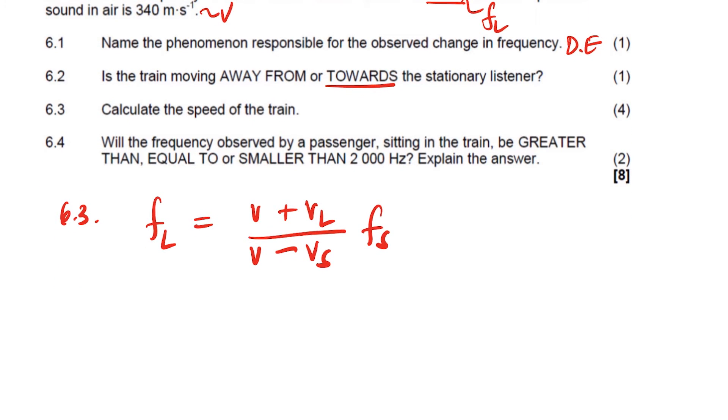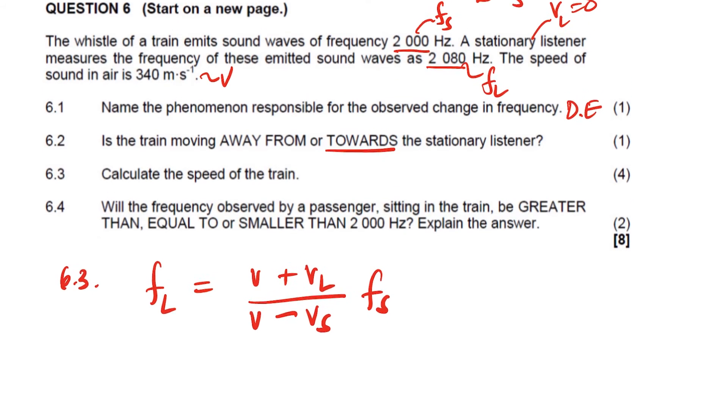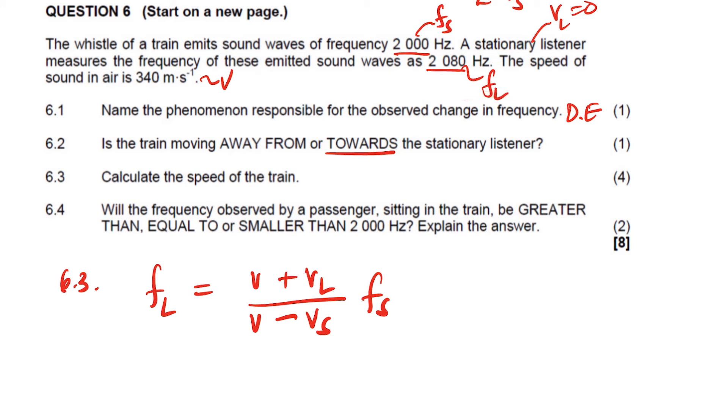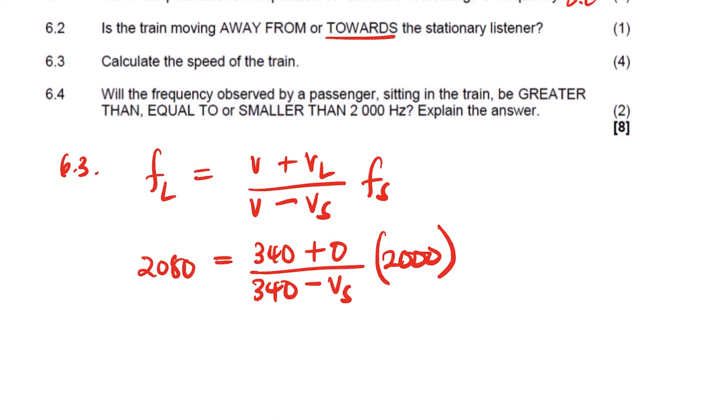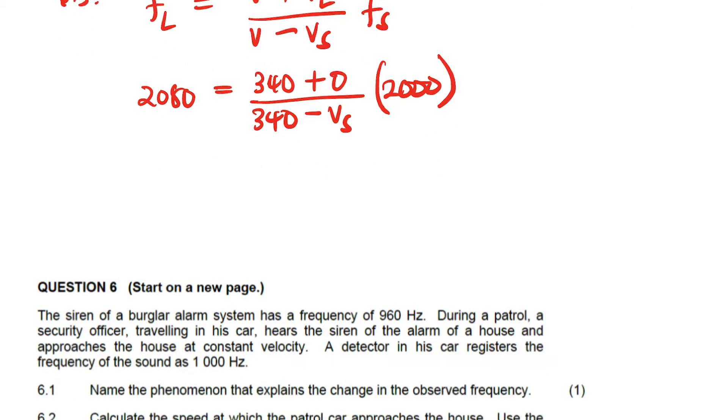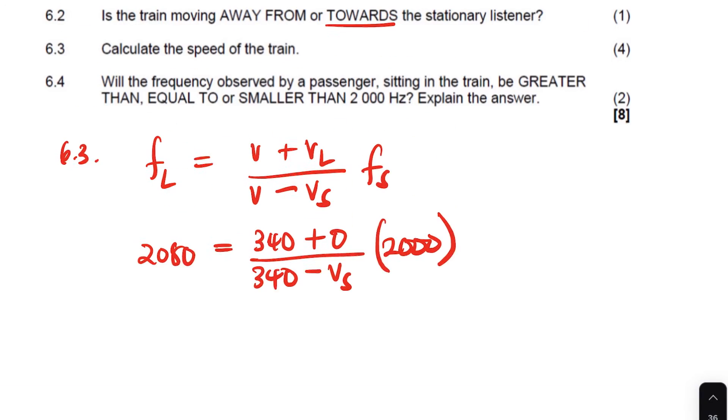So we substitute what do we have? We have the frequency of the listener is 2,080 and the velocity of the sound in the air is 340 plus the velocity of the listener. The velocity of the listener, the listener was stationary, it's zero. And then 340 again minus the velocity of the source. This is the one that we want. The frequency of the source is 2,000. We substitute 2,000. And then guys, anything else here, it's maths, right? It's going to be maths.